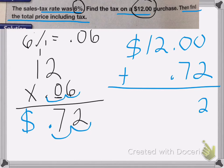I need to add the tax to get my final total. So 0 plus 2 is 2, 0 plus 7 is 7, bring the decimal straight down, $12. And $0.72 is my answer.